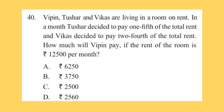Question 40: Vipin, Tushar, and Vikas are living in a room on rent. In a month, Tushar decided to pay one-fifth of the total rent and Vikas decided to pay two-fourths of the total rent. How much will Vipin pay if the rent of the room is rupees 12,500 per month?